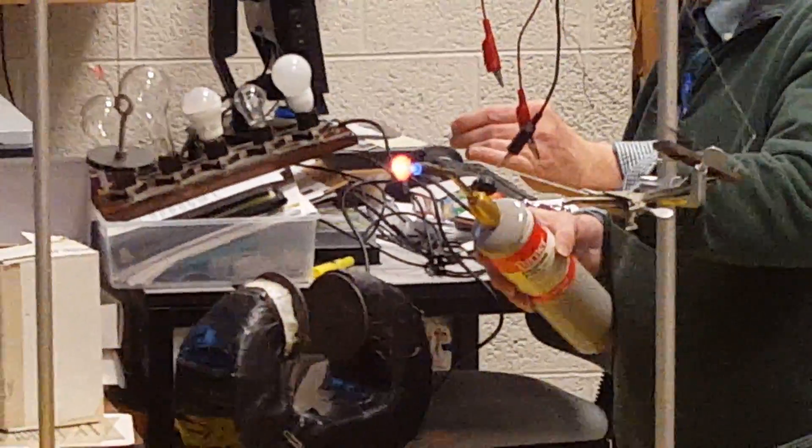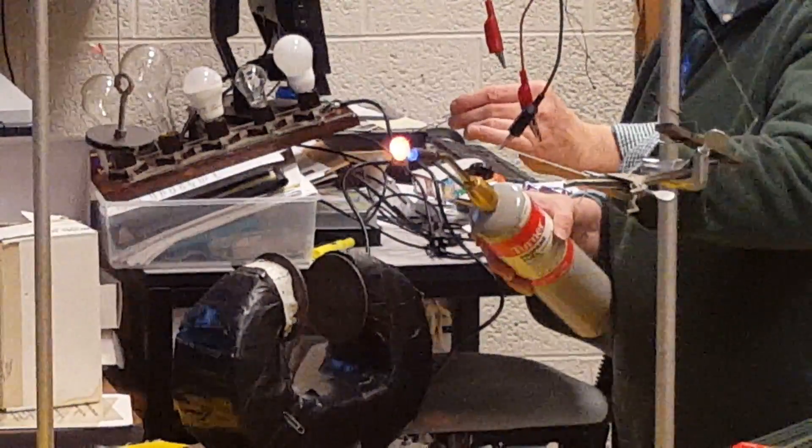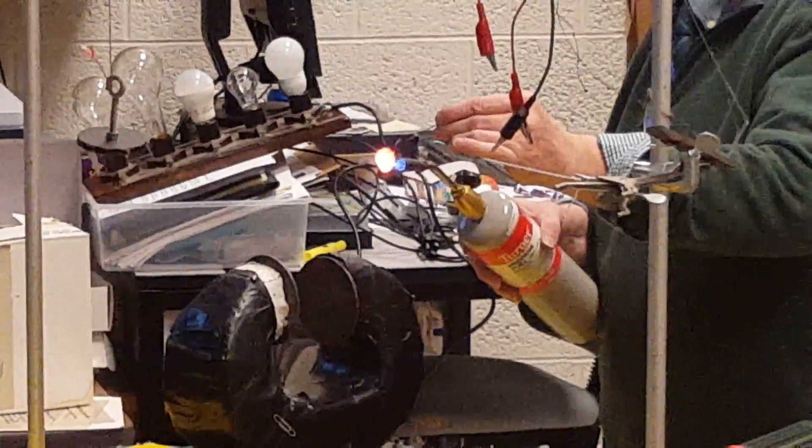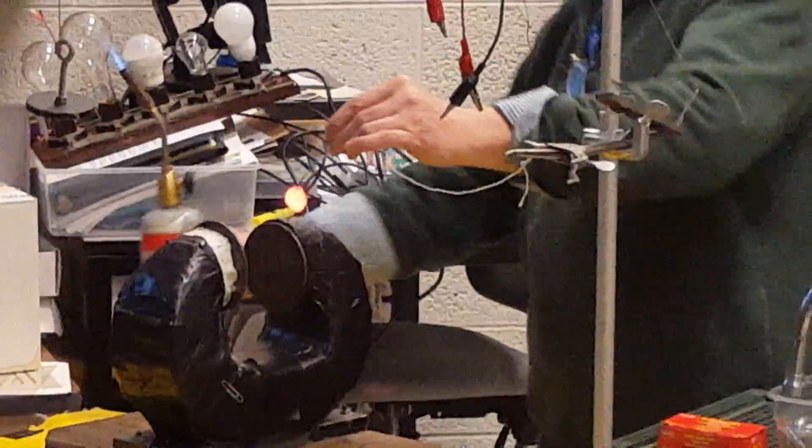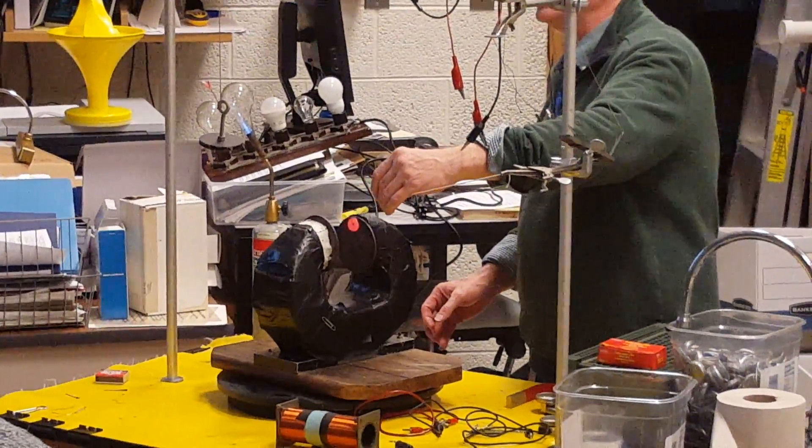So there's a red-hot nickel. Now I cannot melt it because the flame is not hot enough. If I take this away and try to stick it to the magnet, it wants to have nothing to do with it at all.